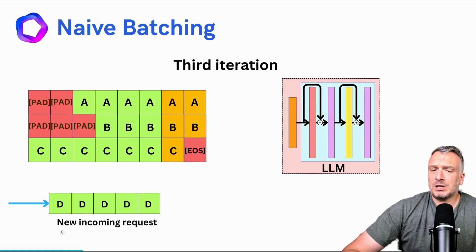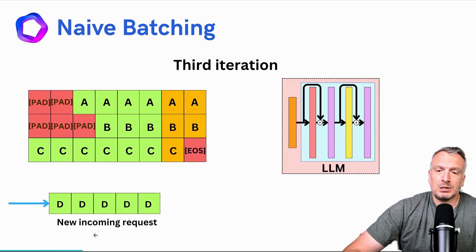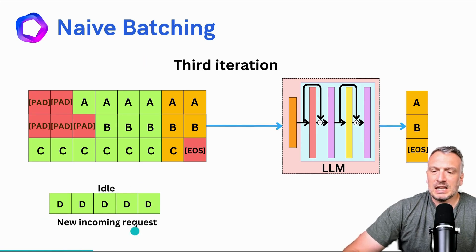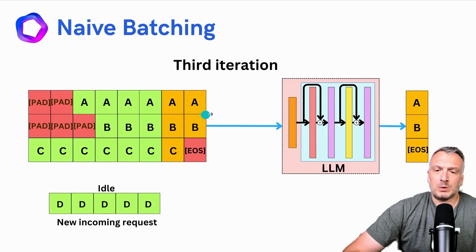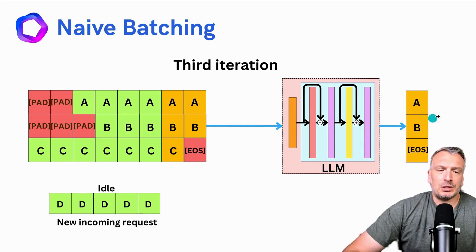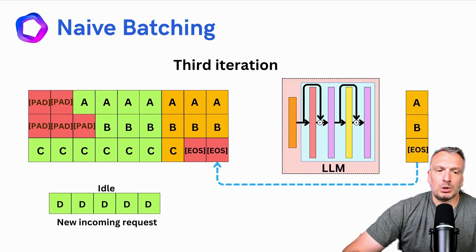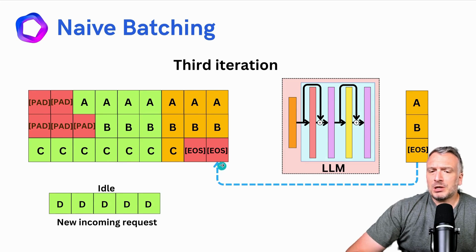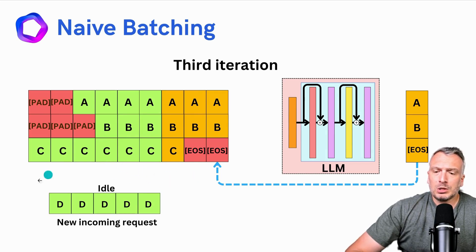Let's imagine that in the third iteration, we have a new incoming request from user D. This new incoming request needs to wait because the other sequences are not finished being decoded — it sits idle, waiting for those sequences to finish. Sequence C is also waiting for sequences A and B to finish before anything can be done. We continue the process, input this batch in the third iteration, and get the different tokens. This is very inefficient because we need to wait for all sequences to be decoded before providing a response, and all incoming requests are idle waiting for the current batch to finish.